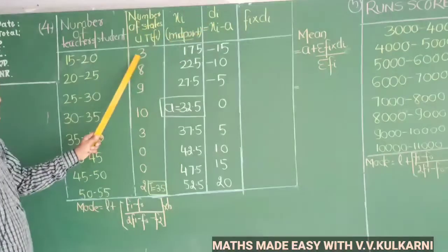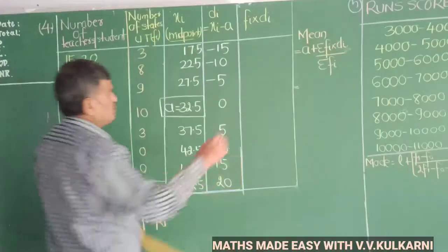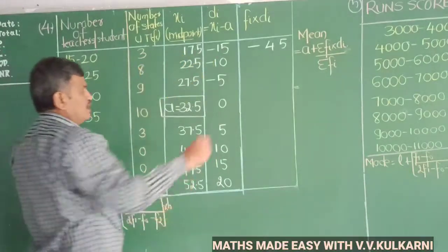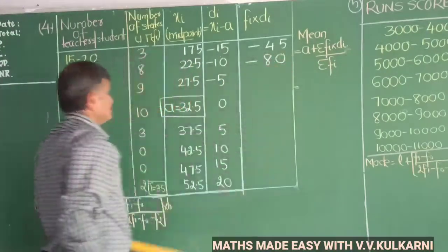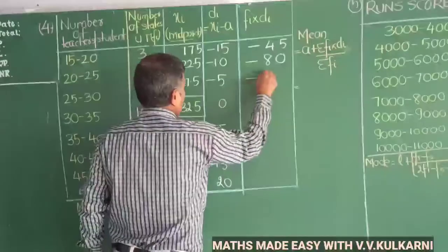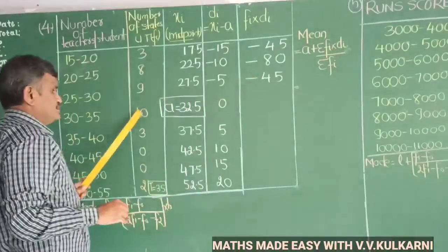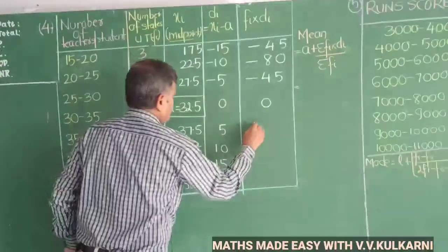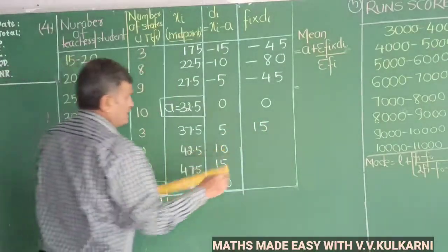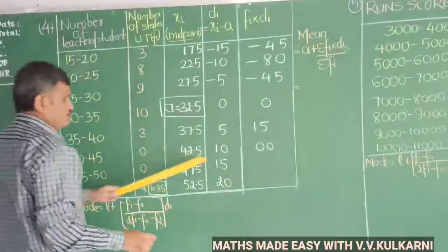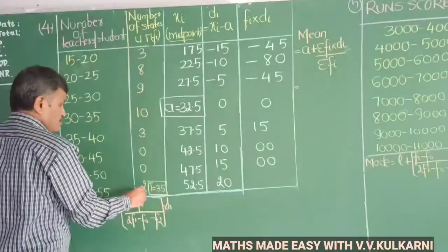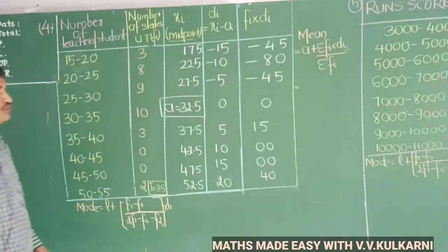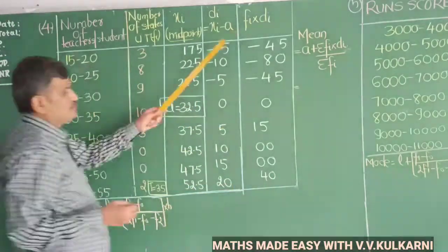Now multiply frequency fi by deviation di to get fi×di for each class. The results are: minus 45, minus 80, minus 45, 0 (since di is 0 for the assumed mean class), plus 15 for the next class, and 0 times 10 and 0 times 15 both give 0. Finally, 2 times 20 gives plus 40.